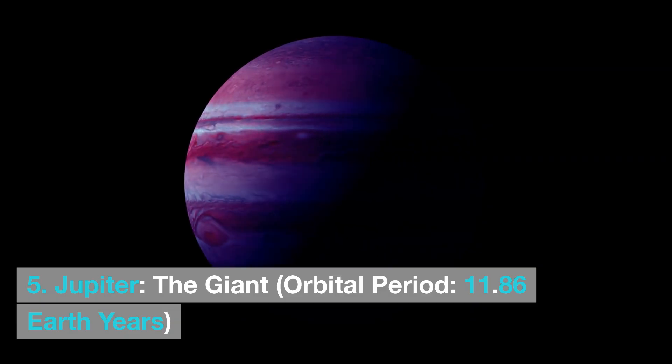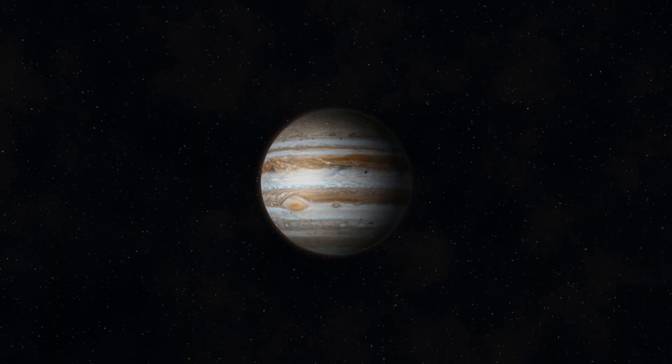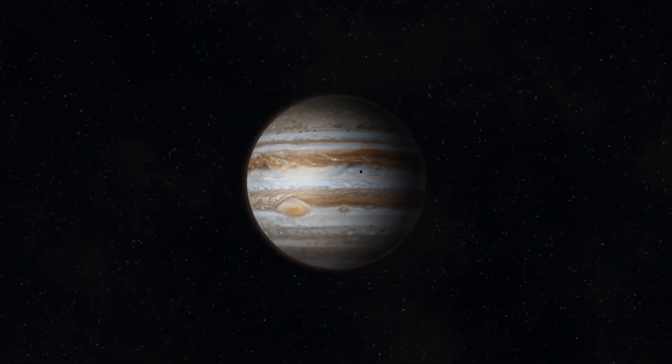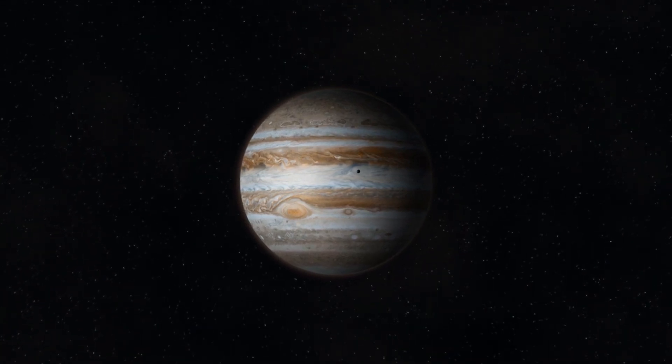Jupiter, the giant, orbital period 11.86 Earth years. The largest planet in our solar system, Jupiter, completes one orbit around the sun in a leisurely 11.86 Earth years.